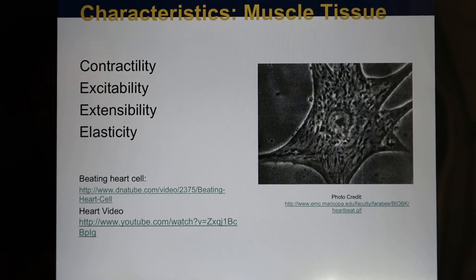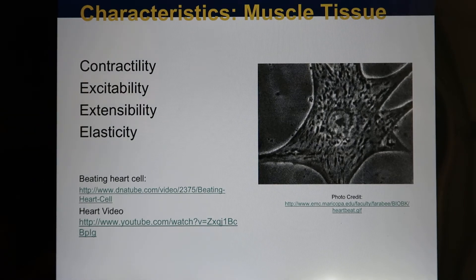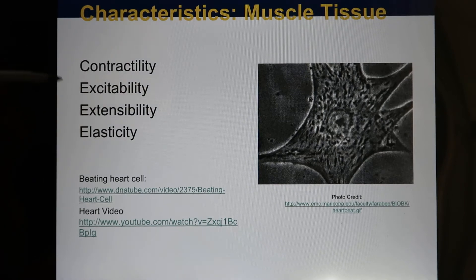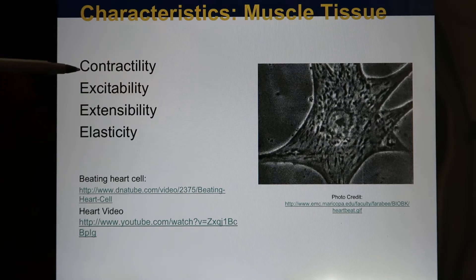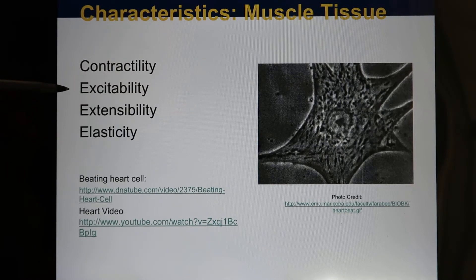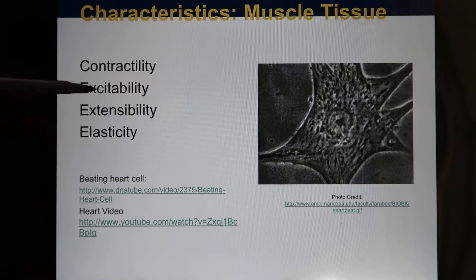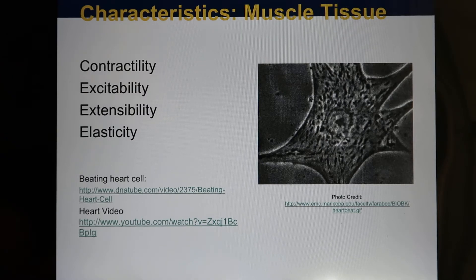The muscle cells have certain characteristics. They're able to contract and have excitability — they're able to generate an electrical signal. This is similar to nervous tissue, which we'll talk about in the next chapter.